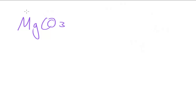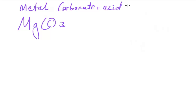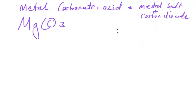The basic metal carbonate and acid reaction produces a metal salt, CO₂ (carbon dioxide), and water. The carbon and oxygen from the CO₃²⁻ form CO₂, while the oxygen remaining and H⁺ ions from the acid form water.